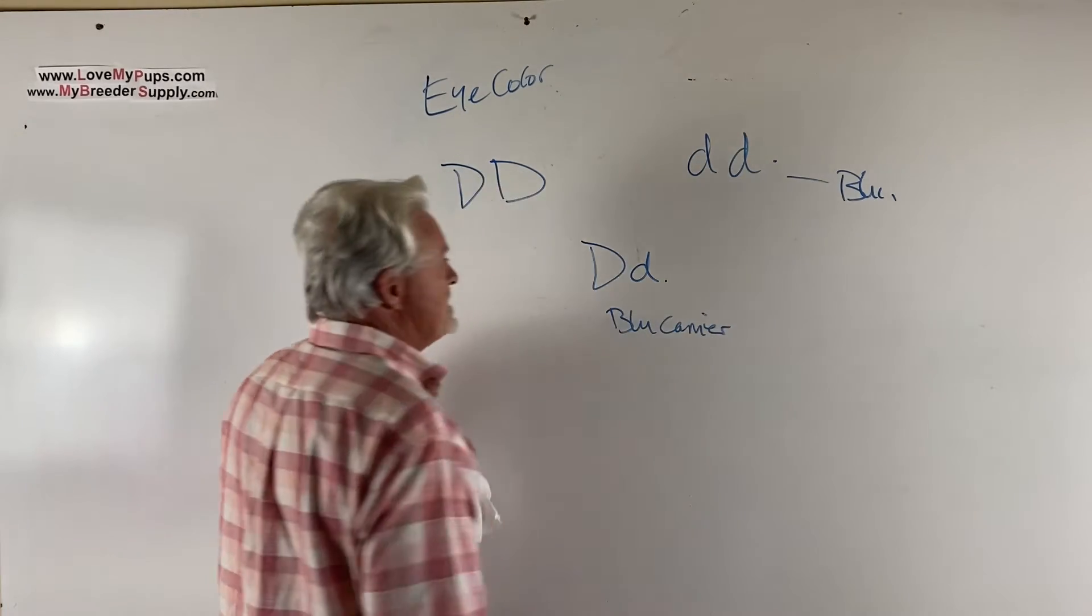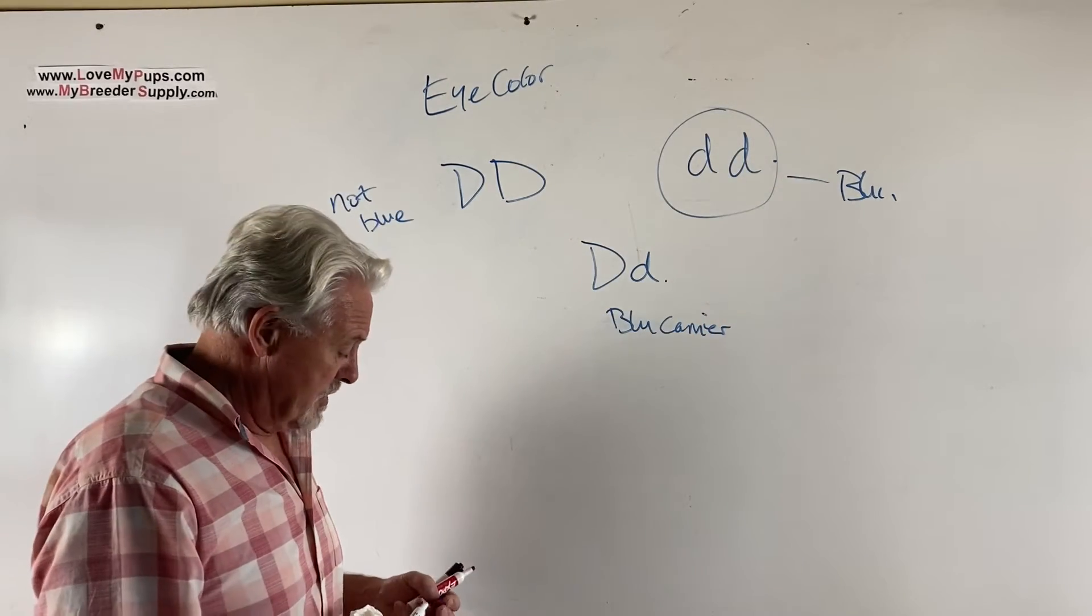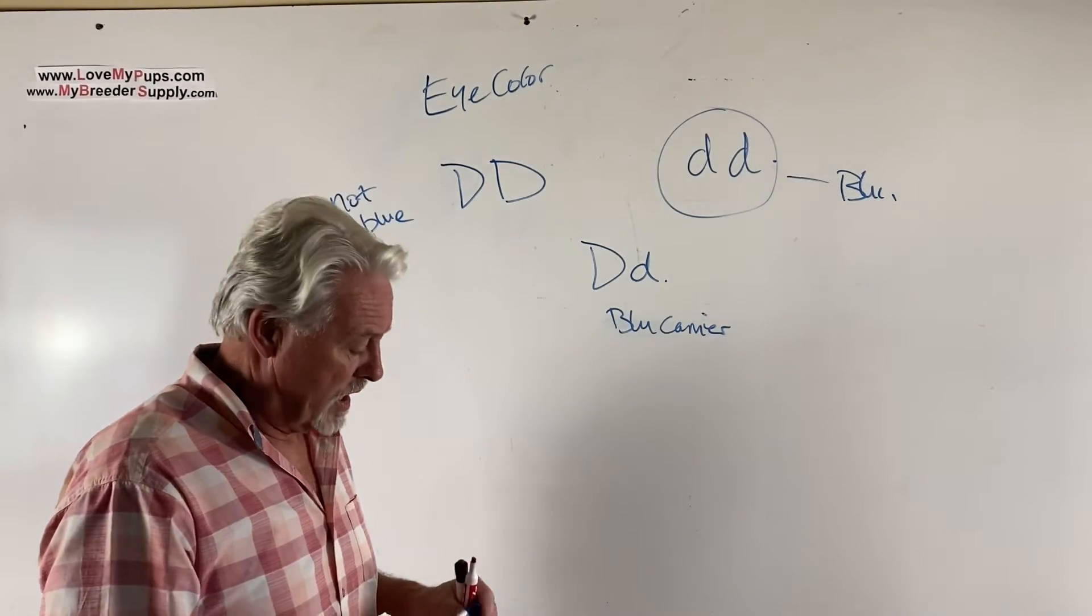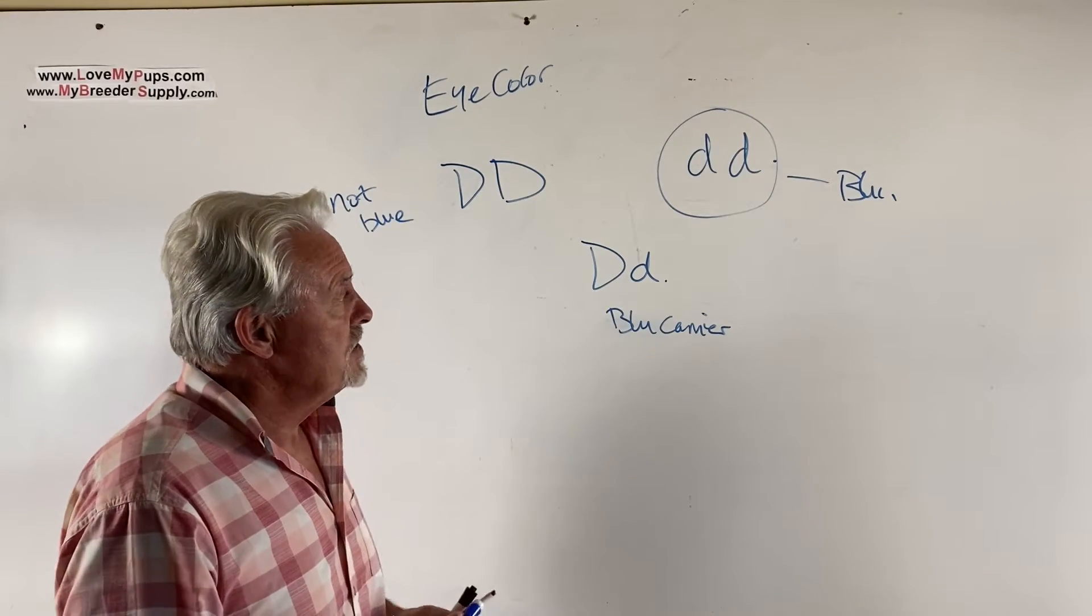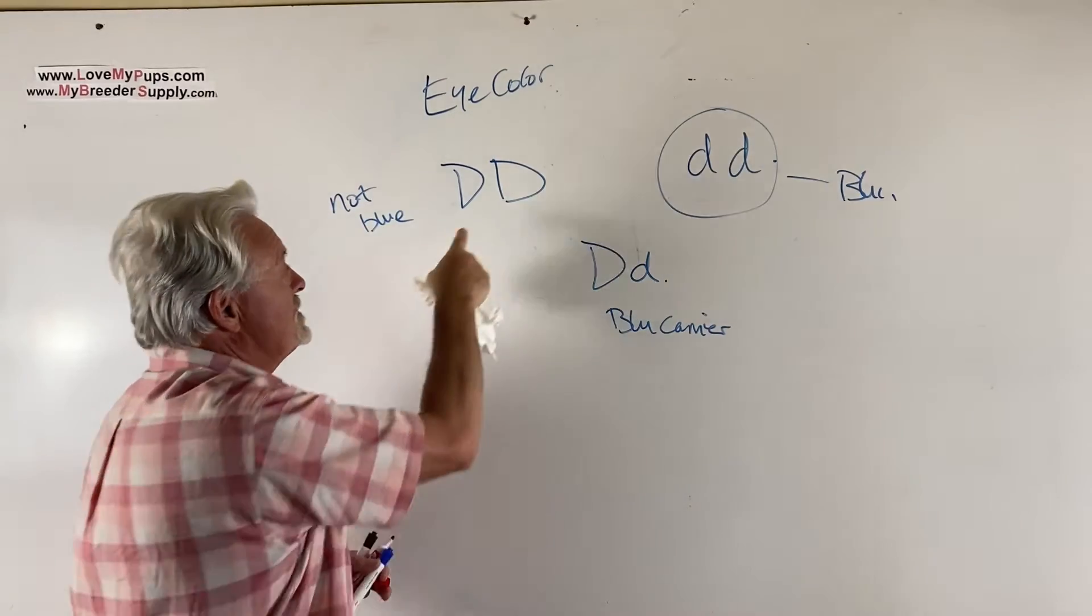All right. So this is a not blue. And this is a blue. And this is a blue carrier. And since this is a recessive gene, which most genes are, you have to have two copies for the blue to show up. So in you, if you have blue eyes, it means that your parents either have blue eyes or they have the gene for blue eyes. Neither of your parents could be that. Otherwise, they're not your parents.